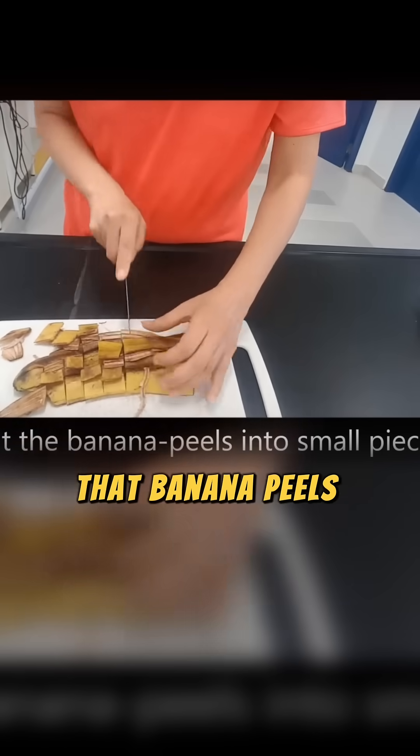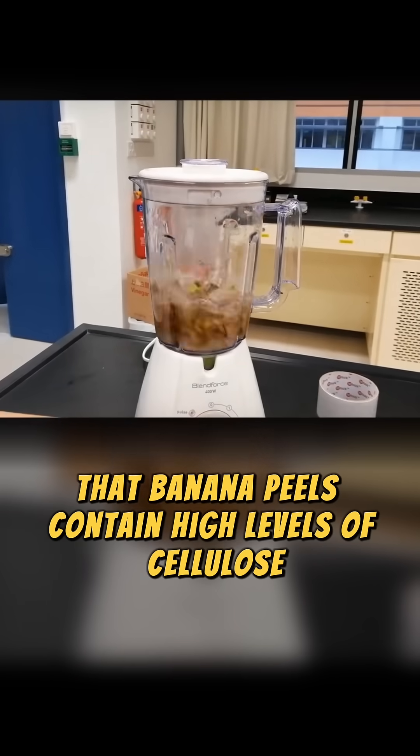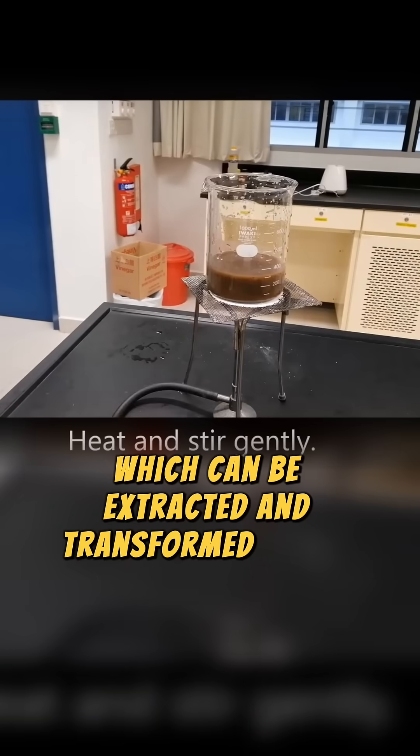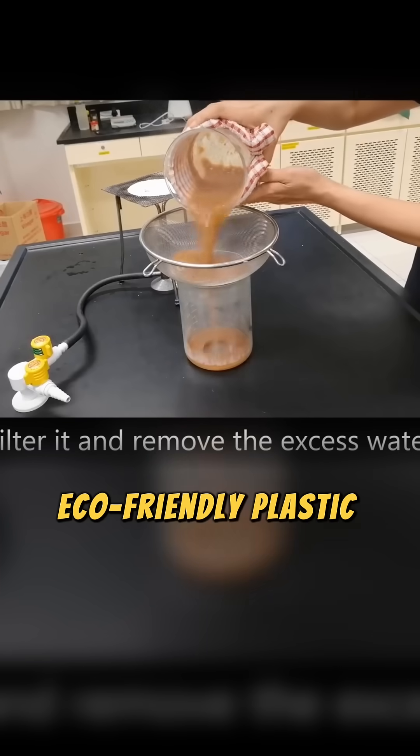Scientists have discovered that banana peels contain high levels of cellulose, which can be extracted and transformed into a flexible, eco-friendly plastic alternative.